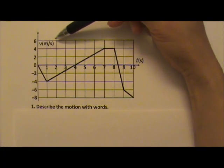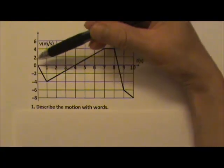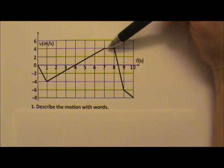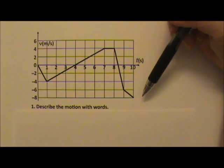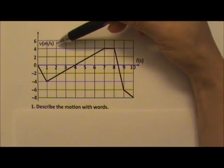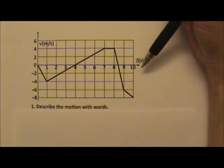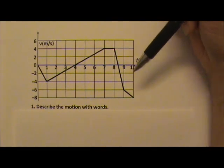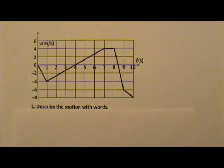Now we have a velocity versus time graph. The shape is exactly like the previous graph, but this is not position — it is a velocity versus time graph. See if you can describe the motion of this object with words.